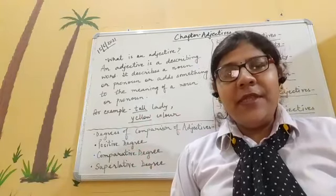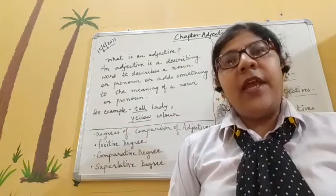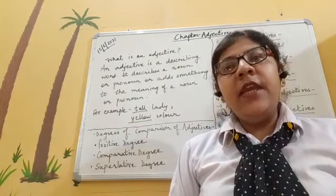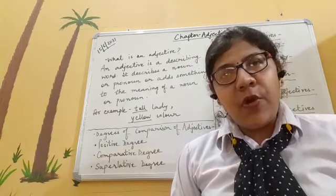Superlative degree means comparison among more than two. For example, 'he is the tallest boy in the whole class' — here comparison is between more than two, so 'tallest' is the superlative degree. So the three forms are: tall, taller, and tallest.